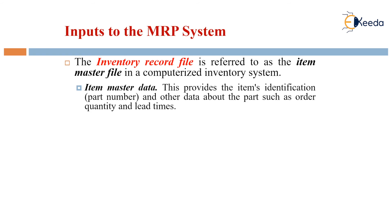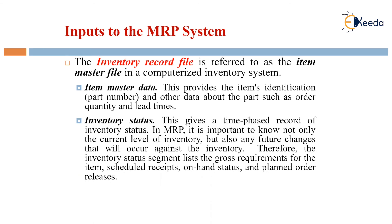In a computerized inventory system, the item master file provides the item's identification and other data about parts, such as order quantity and lead times. The complete information is given by the item master data. The inventory status provides a time-phased record of inventory status. In MRP, it is important to know not only the current level of inventory but also any future changes that will occur.